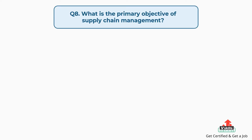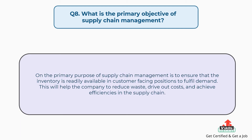Question number eight: what is the primary objective of supply chain management? The answer is the primary purpose of supply chain management is to ensure that the inventory is readily available in customer-facing positions to fulfill demand. This will help the company to reduce waste, drive out costs, and achieve efficiencies in the supply chain.